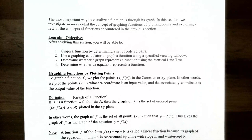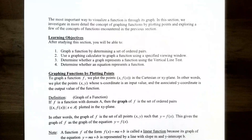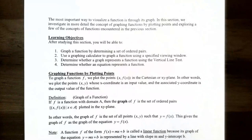In this section we're going to talk about how to graph a function by determining a set of ordered pairs. We're going to use a graphing calculator to graph a function using a specified viewing window. We're going to determine whether a graph actually represents a function using the vertical line test, and also determine whether an equation represents a function.